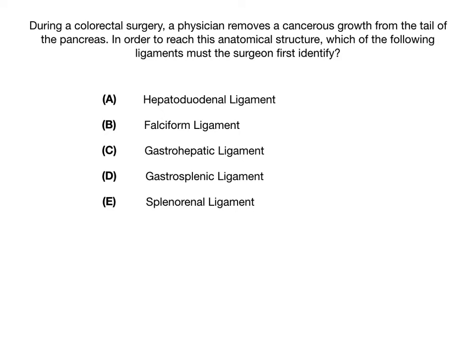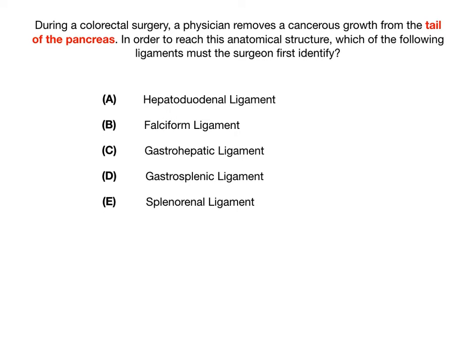The first thing that you need to do when approaching this question is to think about what they're asking. They're asking you to figure out which one of these five GI ligaments contains the tail of the pancreas. The correct answer for this particular question is E, the splenorenal ligament.